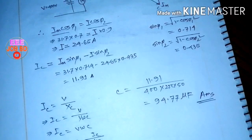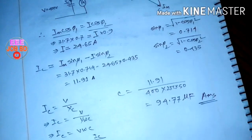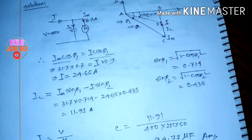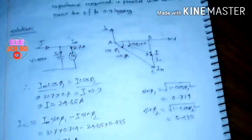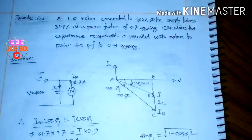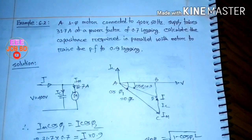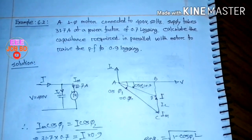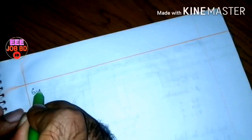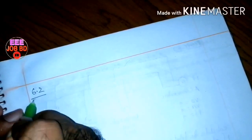We solved this using the IC method. Alternatively, this can also be solved using the power triangle method. Let's now see how the power triangle method works for example 6.2.